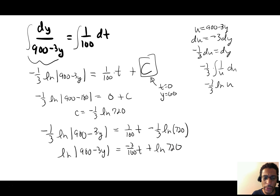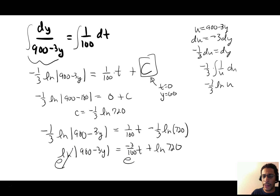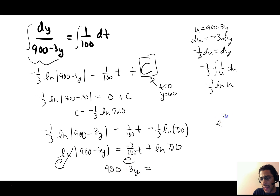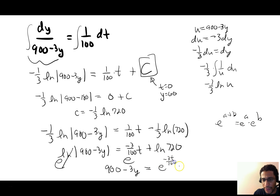Now we raise e to both sides. Using e^(a+b) = e^a · e^b, we get: 900 − 3Y = e^(−3t/100) · e^(ln 720) = 720 · e^(−3t/100).